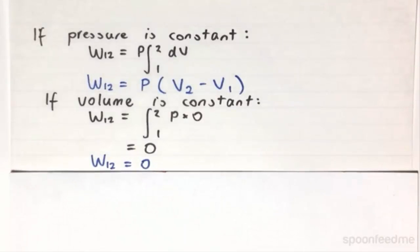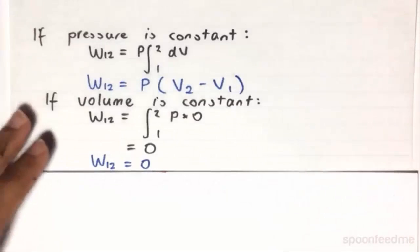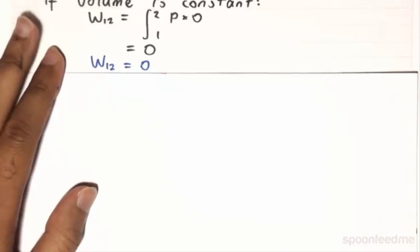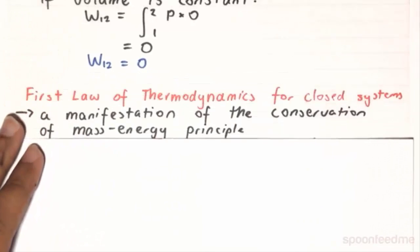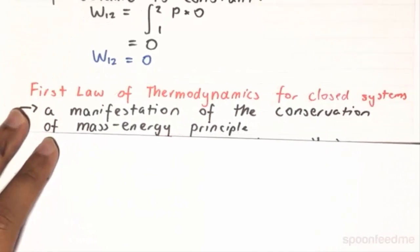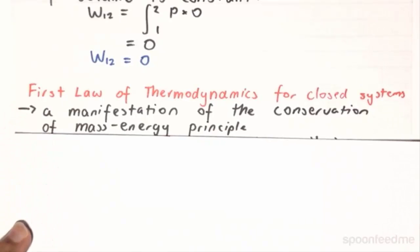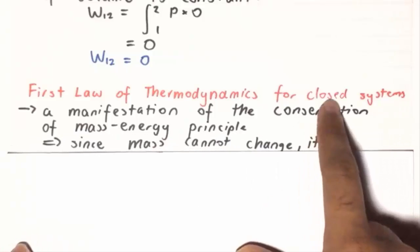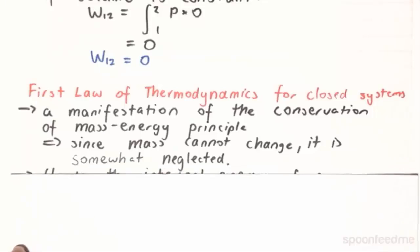So now that we have established our heat and our work, it is important to move on to our first law of thermodynamics. Now, the first law of thermodynamics is a manifestation of the conservation of the mass energy principle. So since mass cannot change within a closed system, then necessarily it is somewhat neglected in our analysis.